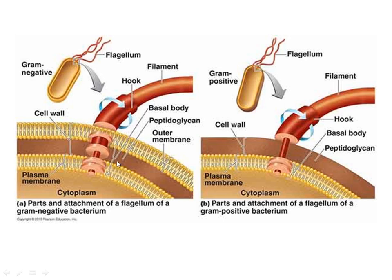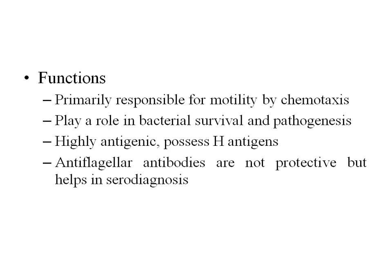There are two pairs of rings in gram-negative bacteria because one pair is submerged in the cell membrane layer and one pair in the outer membrane layer, which is also a lipoprotein. In gram-positive bacteria, there is only one pair, submerged in the plasma membrane or cytoplasmic membrane. The primary function of flagella is motility — specifically chemotaxis, which is the mechanism of mobilizing the bacteria towards the site of nutrition.